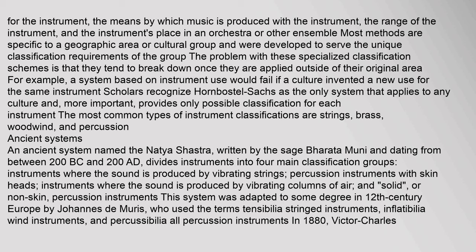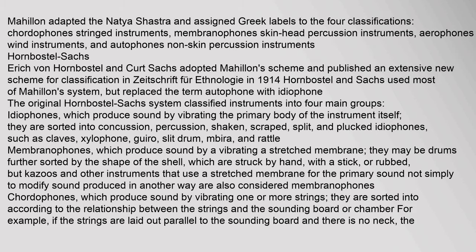In 1880, Victor-Charles Mahillon adapted the Natyashastra and assigned Greek labels to the four classifications: chordophones for stringed instruments, membranophones for skin head percussion instruments, aerophones for wind instruments, and autophones for non-skin percussion instruments. Erich von Hornbostel and Kurt Sachs adopted Mahillon's scheme and published an extensive new scheme for classification in Zeitschrift für Ethnologie in 1914.